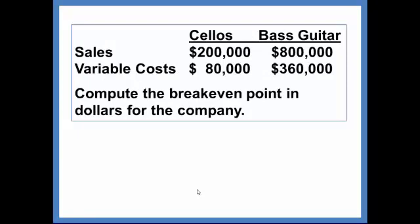Cellos have sales of $200,000, bass guitars $800,000. Variable costs are $80,000 for cellos and $360,000 for bass guitars. We are asked to compute the breakeven point in dollars for the company.